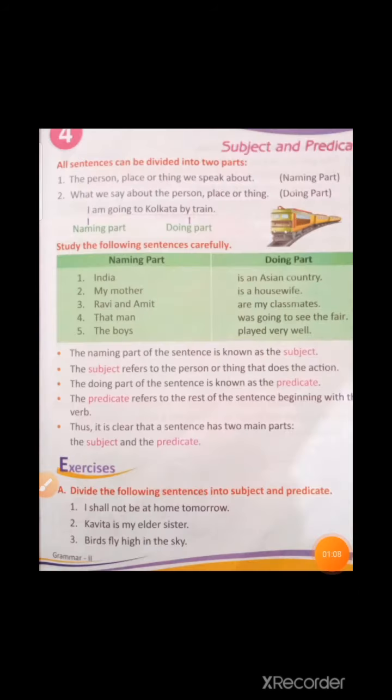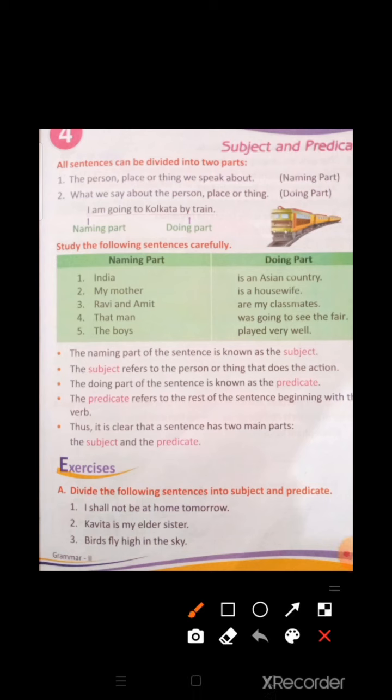A complete sentence has two parts: Subject and Predicate. All sentences can be divided into two parts. The person, place, or thing we speak about is the naming part. What we say about the person, place, or thing is the doing part.